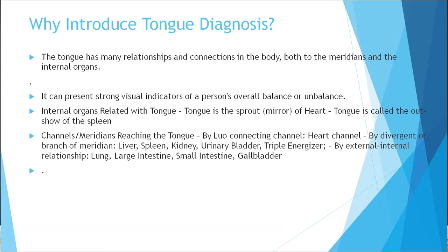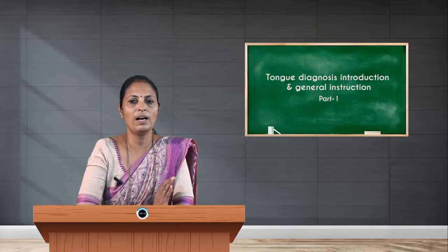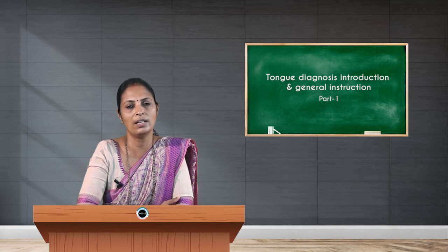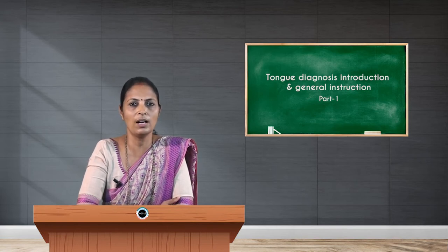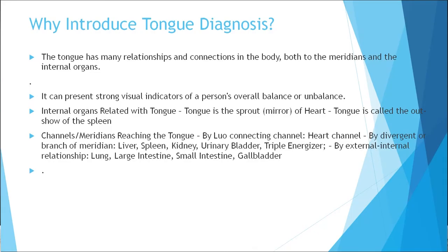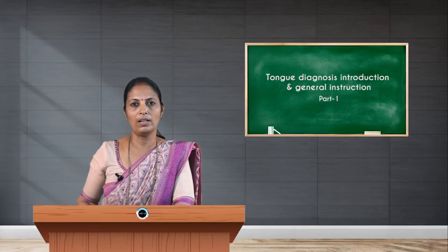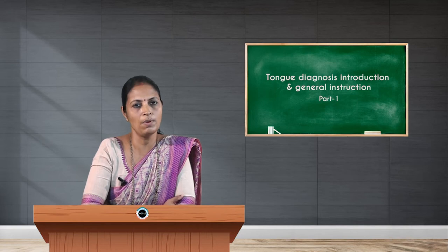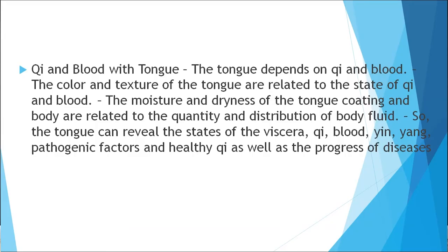The internal organ most related to the tongue is mainly the heart, and it is also an important representation of the functions of the spleen. Channels and meridians connect to the tongue — mainly the heart channel directly, and divergent branches such as the liver, kidney, urinary bladder, and triple warmer meridians connect through collateral branches. External and internal connections include the lung, large intestine, small intestine, and gallbladder, and we can see the reflection of these organs in different parts of the tongue through color changes or texture.